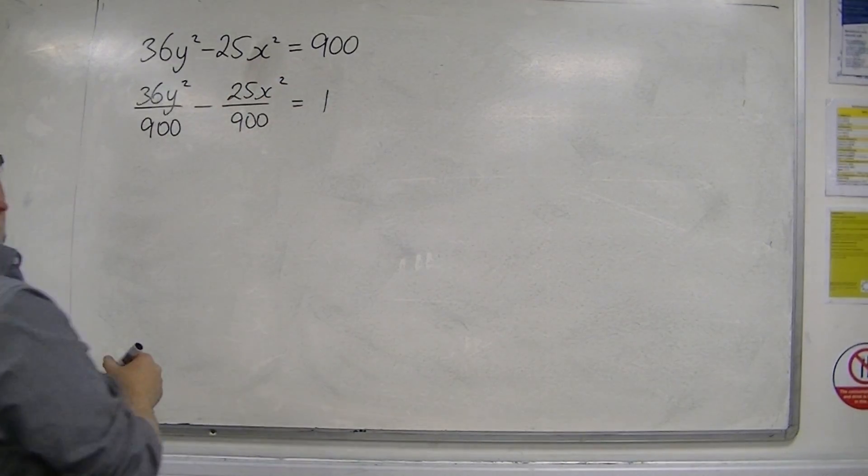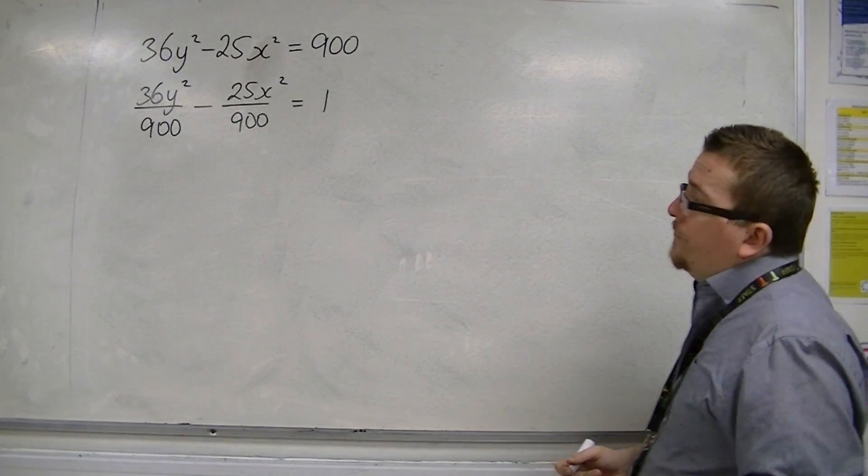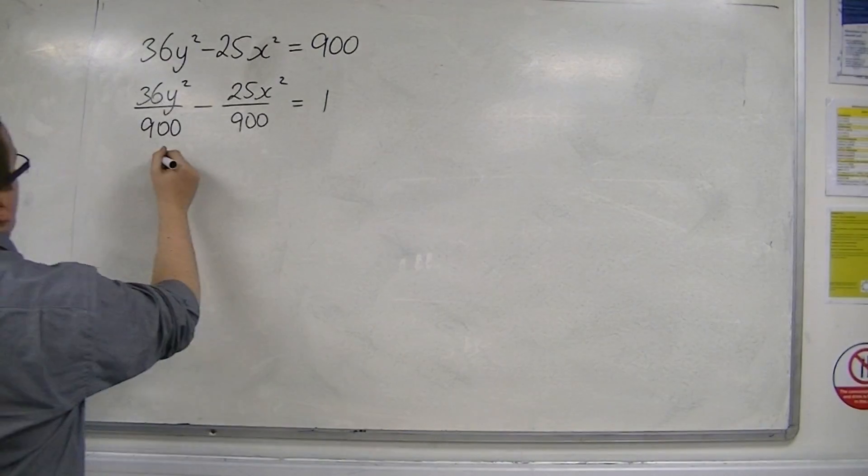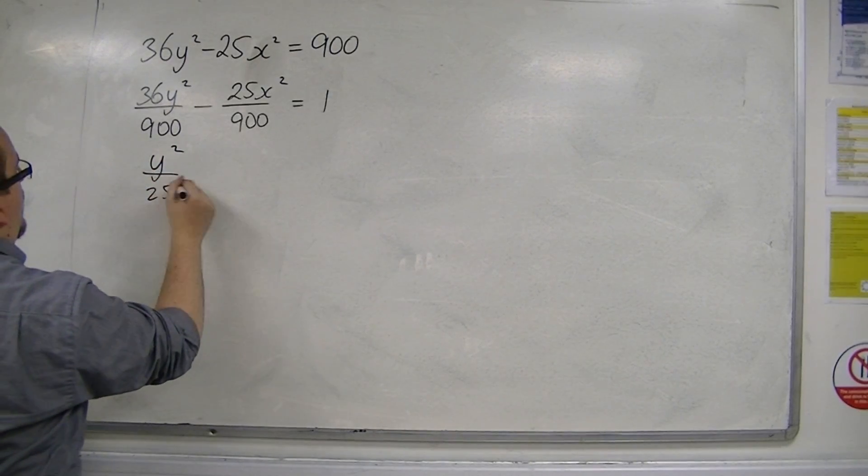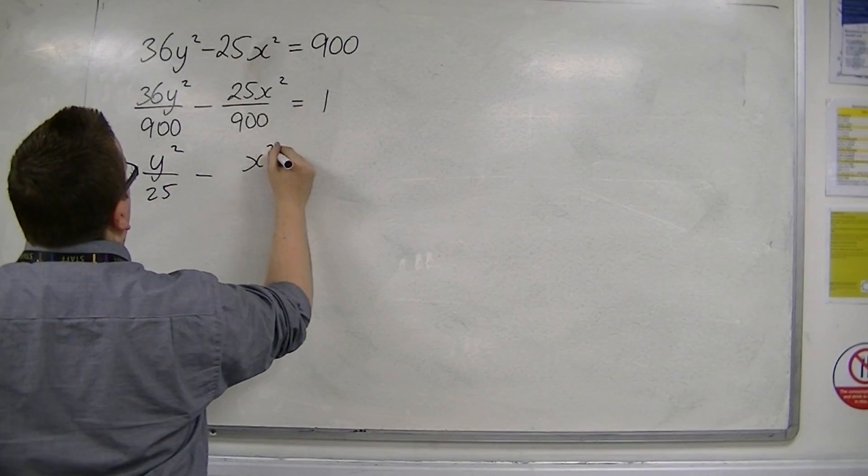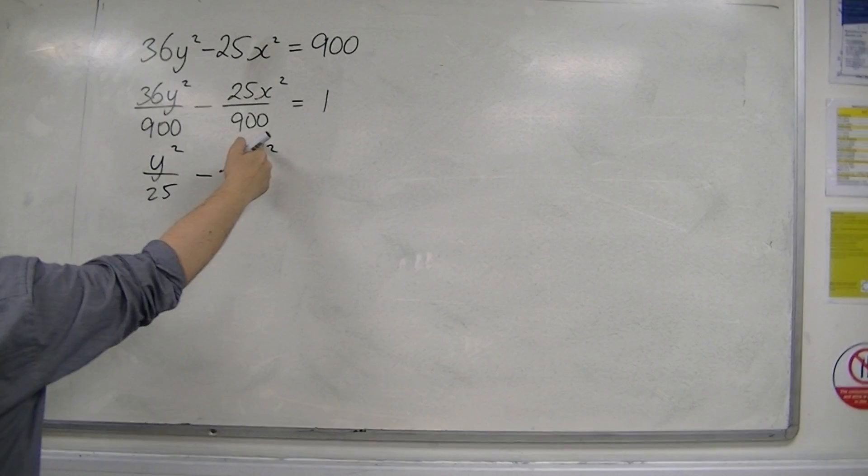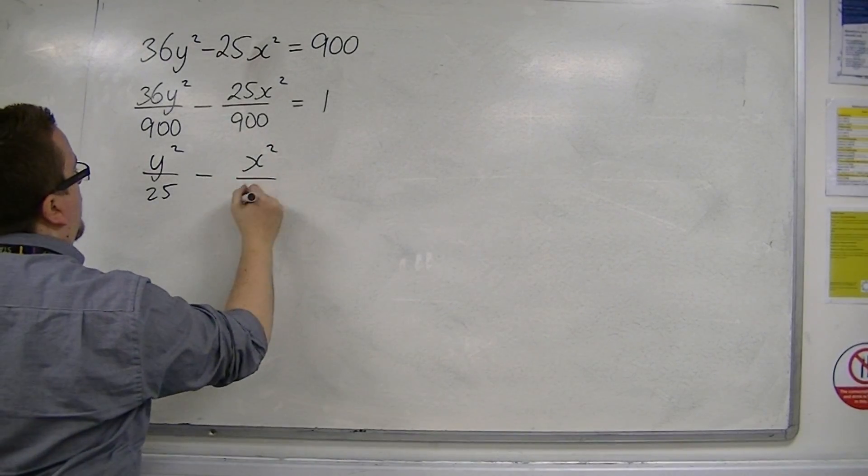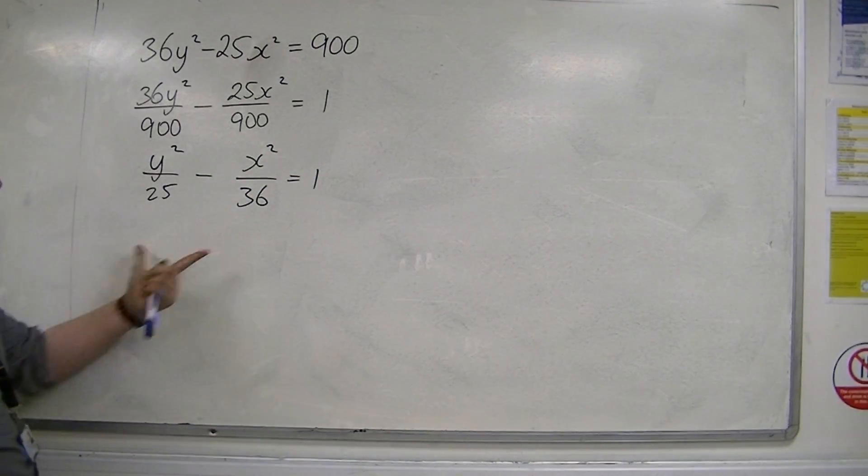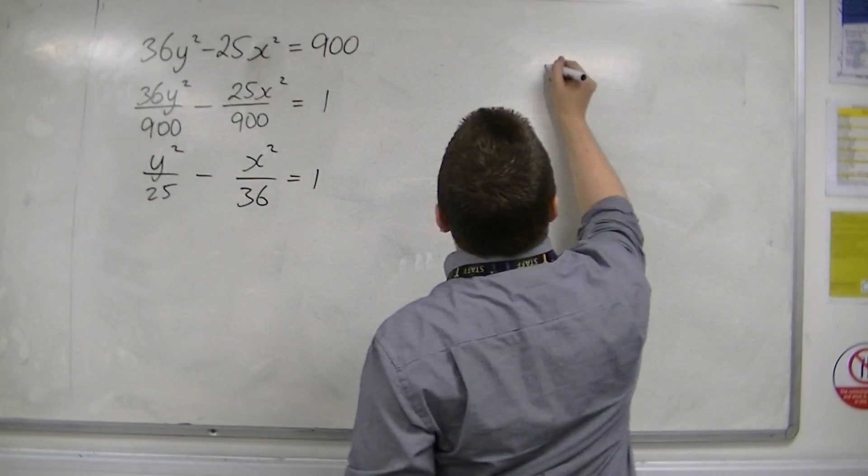Now 36 over 900 is 1 over 25, so that's y squared over 25. Take away 25 over 900 is 1 over 36, so that's x squared over 36 equals 1. This is now in the format that I can work with.